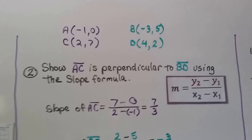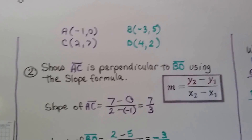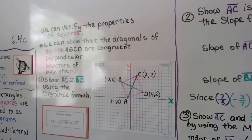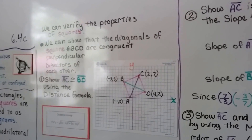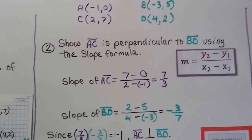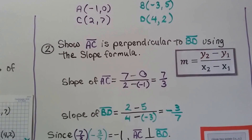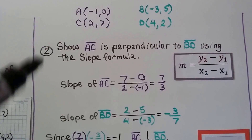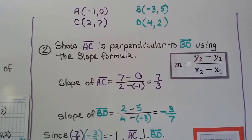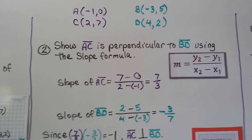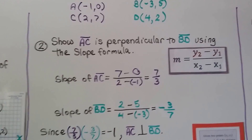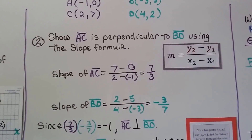So I've got the ordered pairs here again to help us out. We need to show that segment AC is perpendicular to segment BD using the slope formula. This is the second part of trying to show that the diagonals are congruent perpendicular bisectors of each other. The first thing we did was put the points into the distance formula to show that the diagonals were congruent. Now we put in the ordered pairs according to the slope formula, and we find the slope of segment AC is seven thirds.